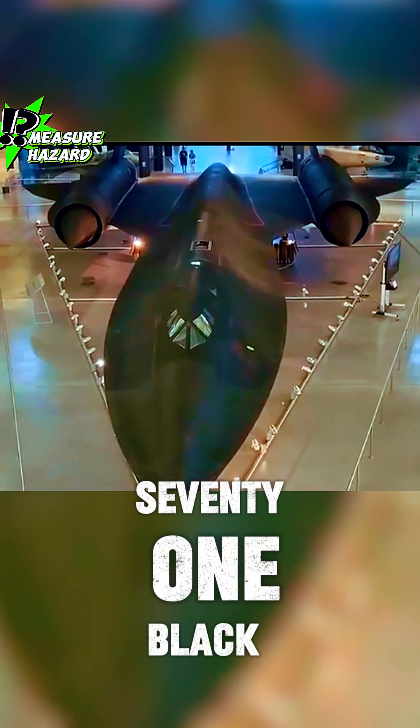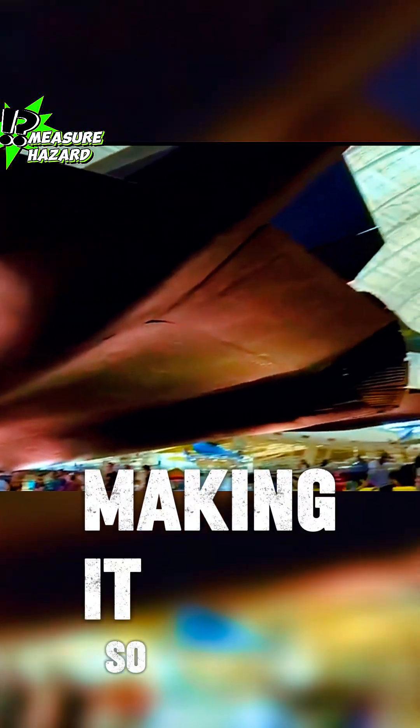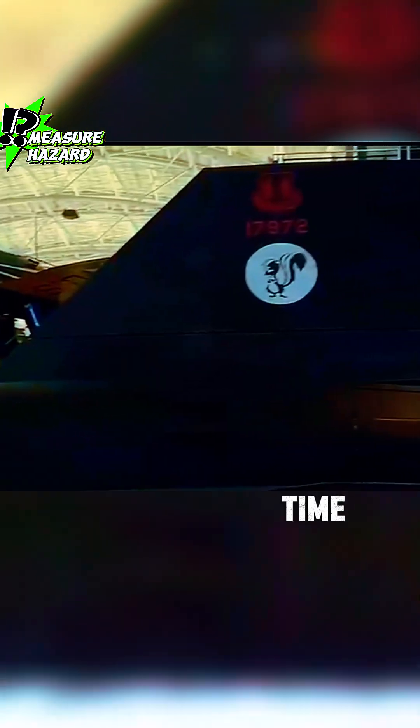The SR-71 Blackbird is a supersonic reconnaissance aircraft developed by the United States over 60 years ago. It could reach a top speed of Mach 3.2, making it so fast that even missiles of the time couldn't catch it.